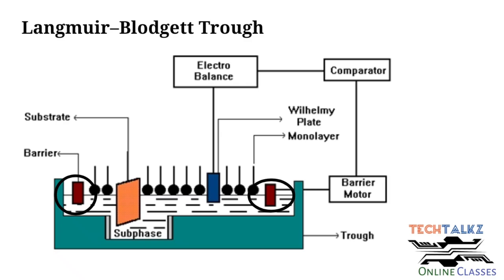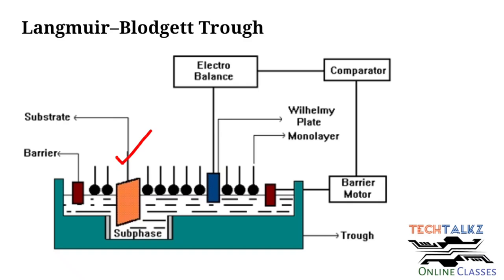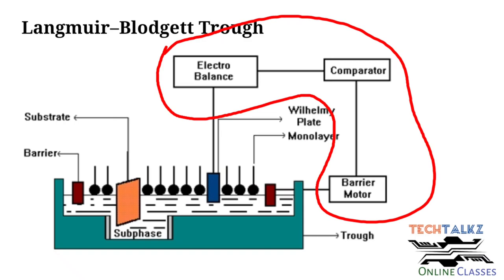In the Langmuir-Blodgett trough, one barrier is fixed and one is movable. As the movable barrier moves, the molecular area decreases and the surface pressure increases. A substrate is used with a setup to detect the surface pressure, which is a very important parameter. The surface pressure must be carefully controlled — if it is too low the monolayer is loosely packed, and if too high the film will collapse.